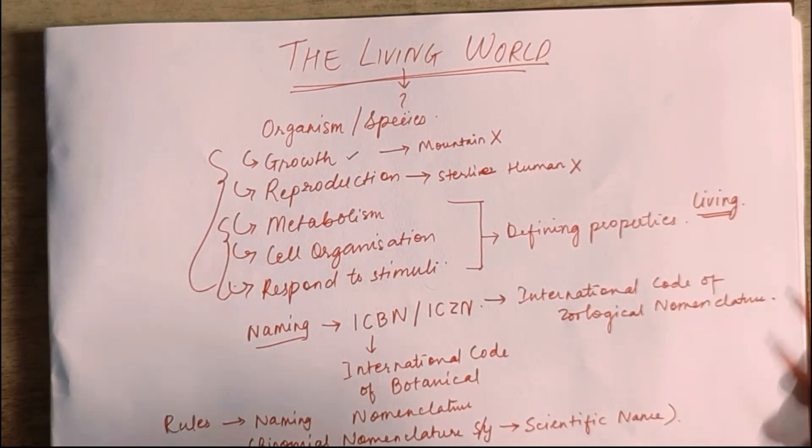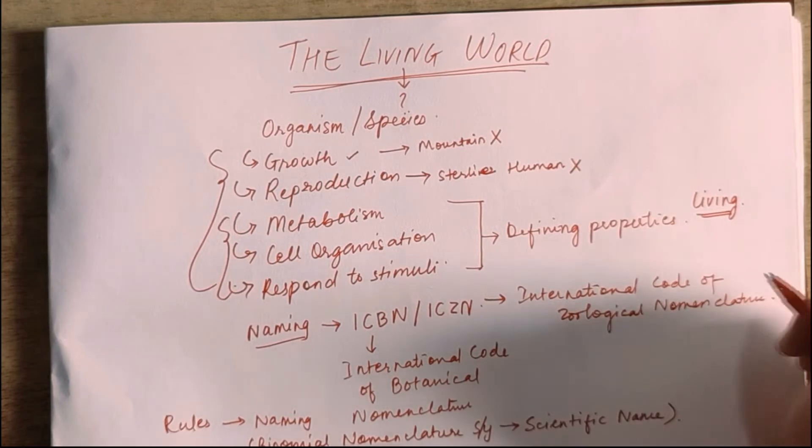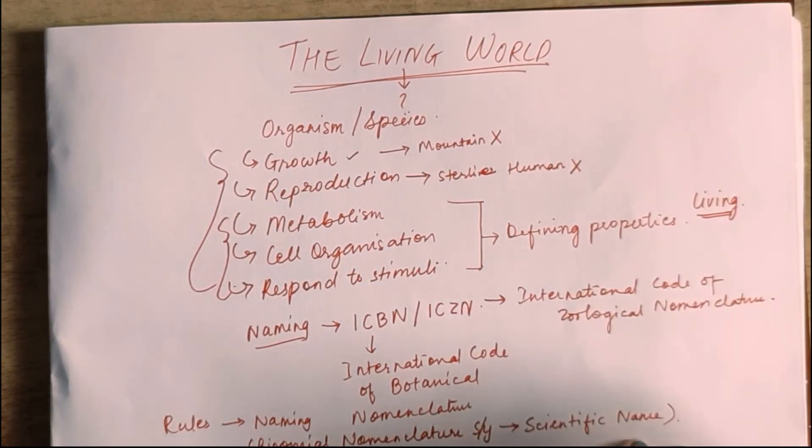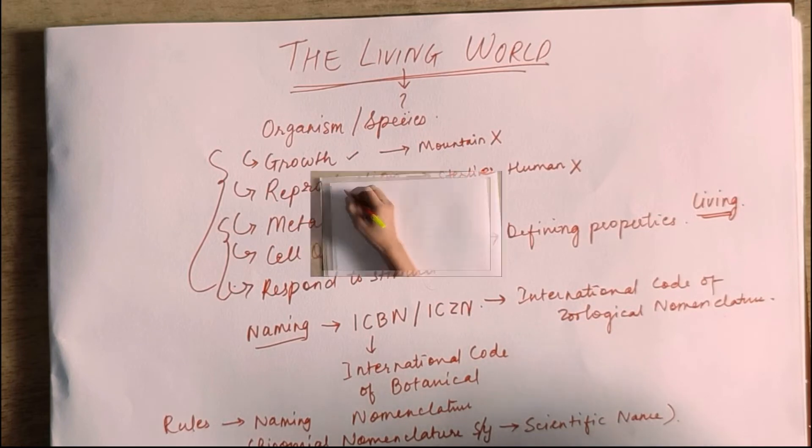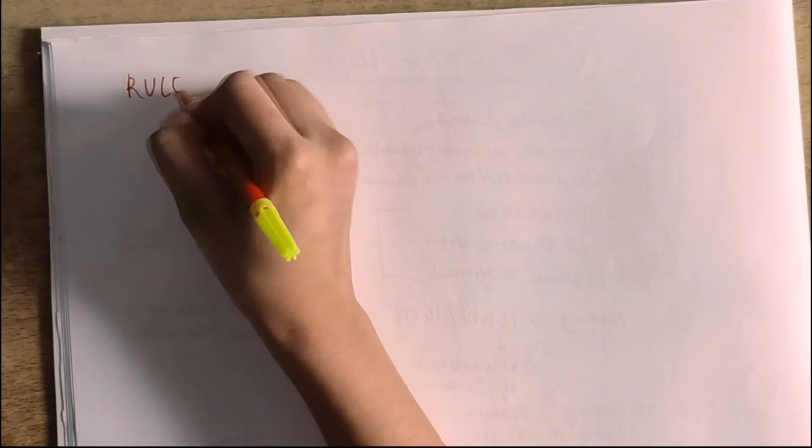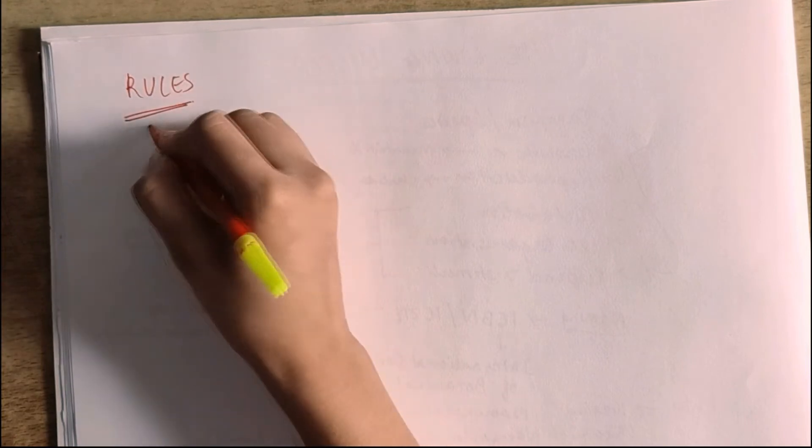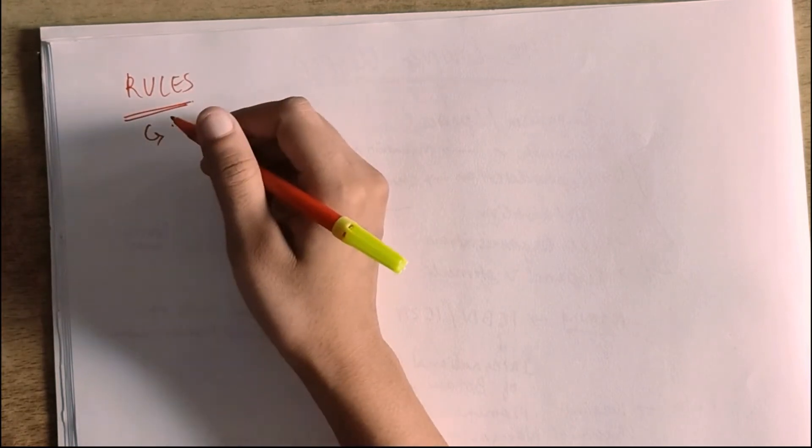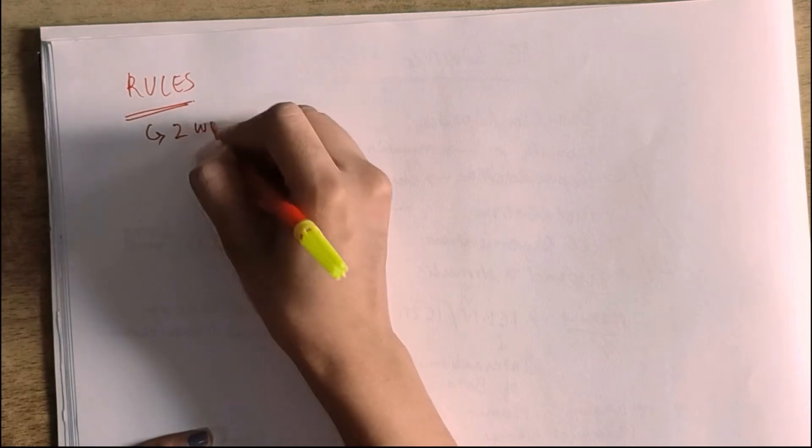Those are the rules. So how do we get binomial nomenclature? Now let's look at the rules. What are the rules? So what is the first rule? Binomial nomenclature. In the name of binomial, there will be two words.